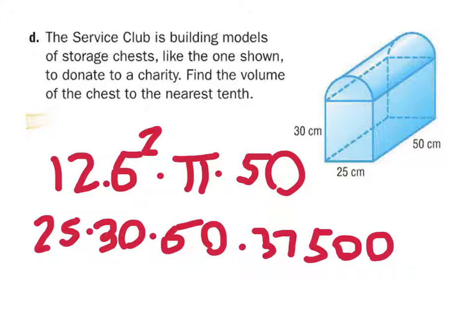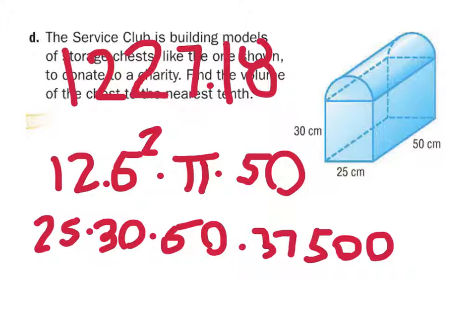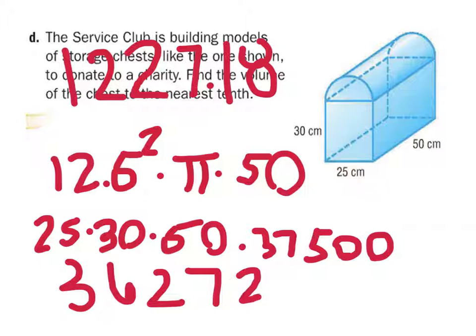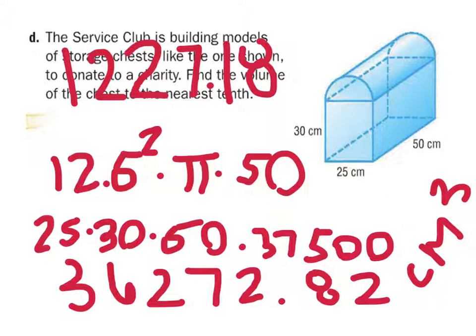And then... Here, you finish it. Okay, I don't even know what that is. So, 0.5 squared times pi times 50 divided by 2, which is 12,271.8. And that's 36,272.82 centimeters cubed. Thank you, Grant.